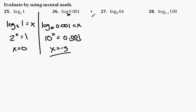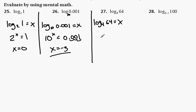Moving on. So we set it up as an equation again: log base 4 given value 64 equals x — that's the exponent. So 4 to the x equals 64. And 4 to the third power is 64. So therefore x equals 3.